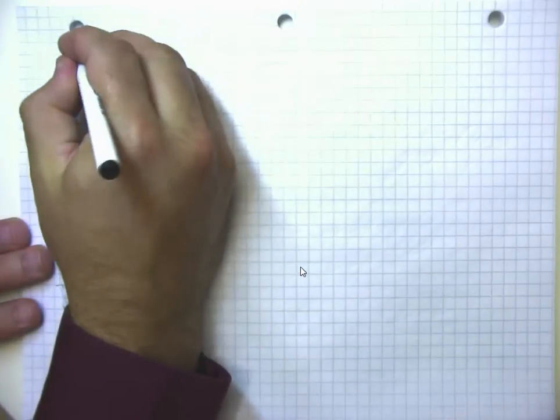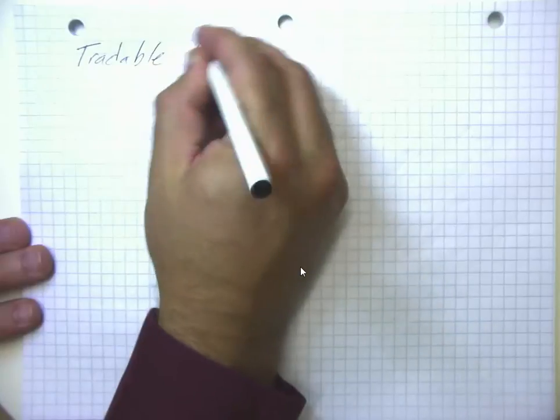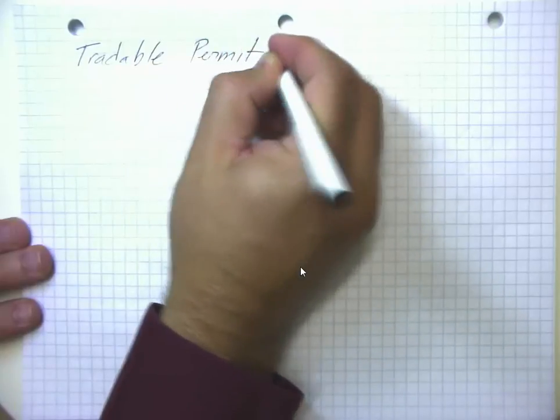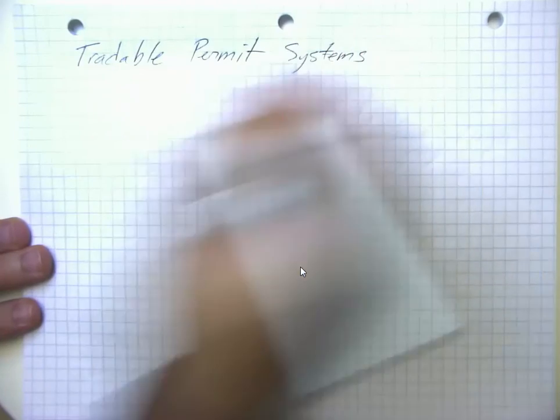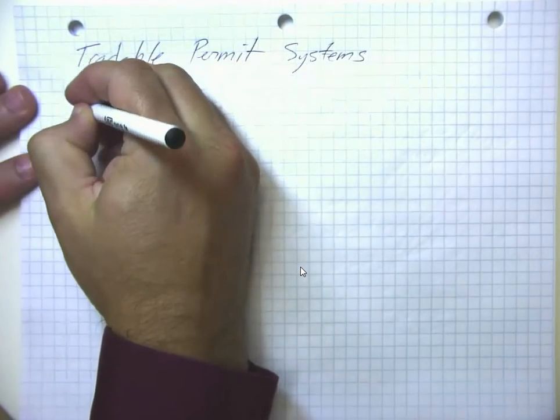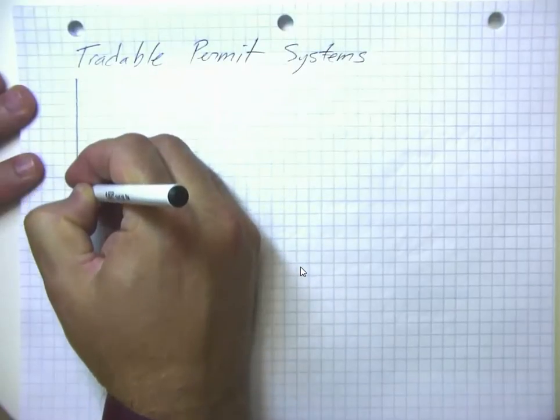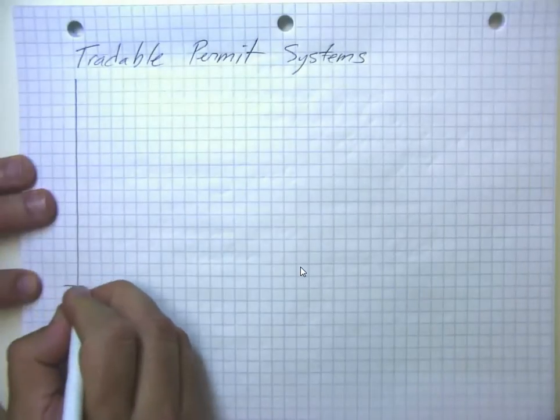But let me now go ahead and talk about tradable permit systems. So one way of dealing with an externality problem, say a negative externality problem, is to tax people.